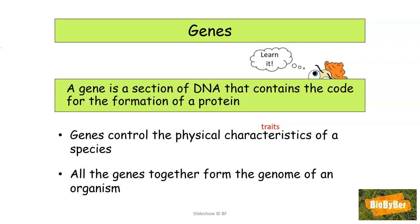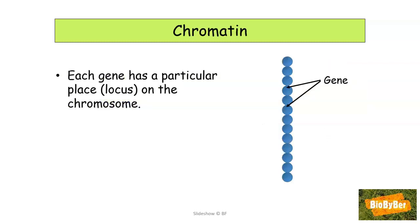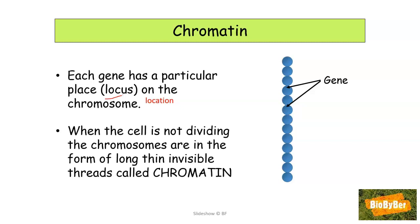All the genes together form the genome of an organism. Each gene has a particular place, or locus, or location on a chromosome. When cells are not dividing, the chromosomes are in the form of long, thin threads called chromatin. For learning purposes, keep an eye on the fact that you have IN in thin, IN in invisible, and IN in chromatin — this will help you remember that when a cell is not dividing, the chromosomes are in the form of thin, invisible threads called chromatin.